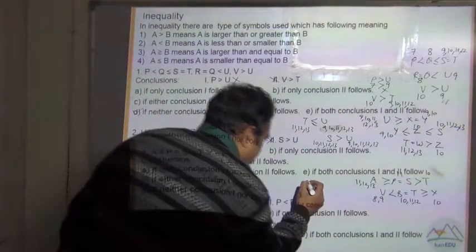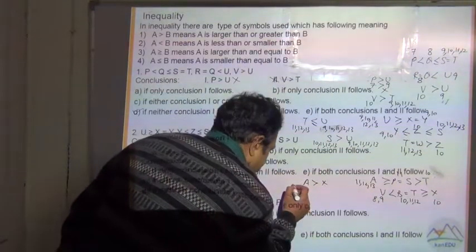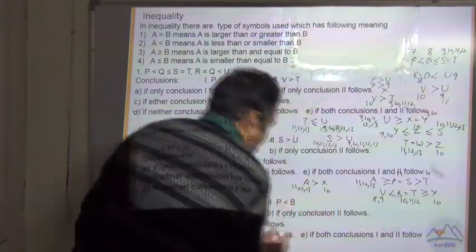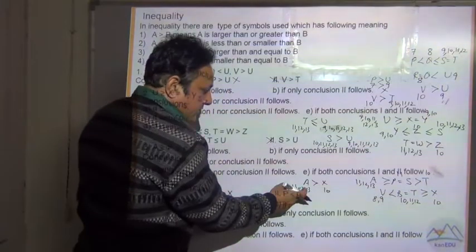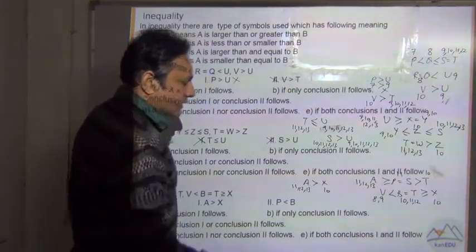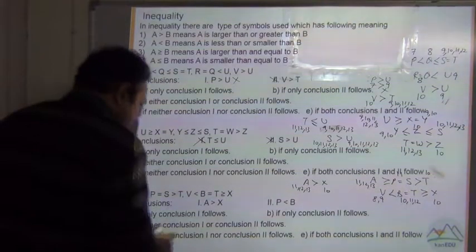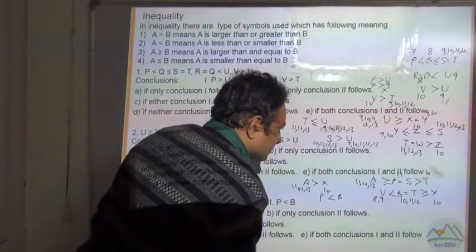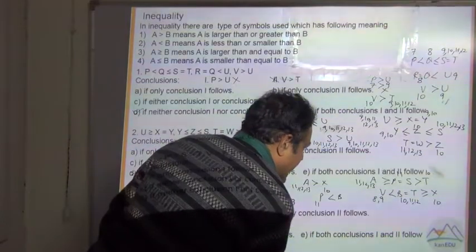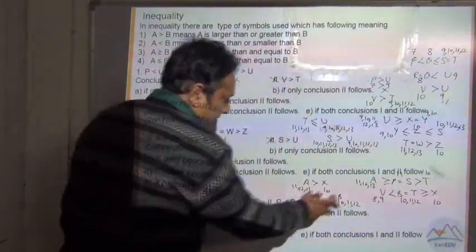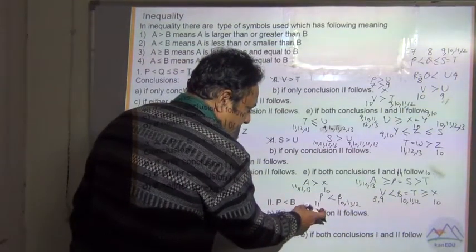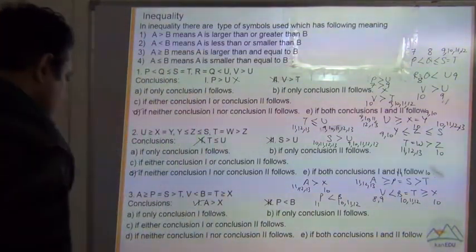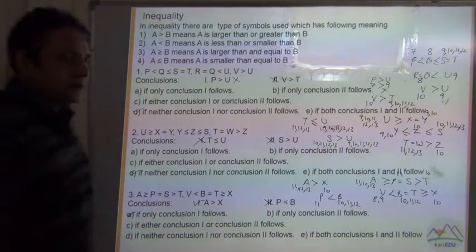Now for conclusion 1: A greater than X. A is 11, 12, or 13, and X value is 10. So A's minimum value is 11, which means A is always greater than X. So this is true. For conclusion 2: P less than B. P is 11 and B can be 10, 11, or 12. So B can be smaller than P, equal to P, or greater than P — this is not definite. So the answer is A: only conclusion 1 follows.